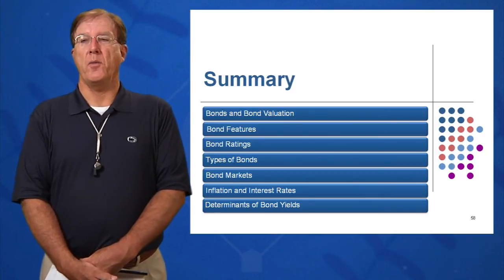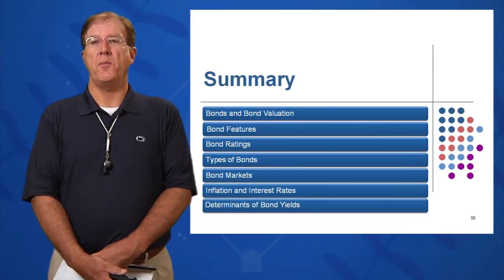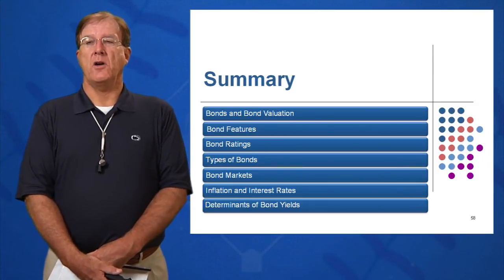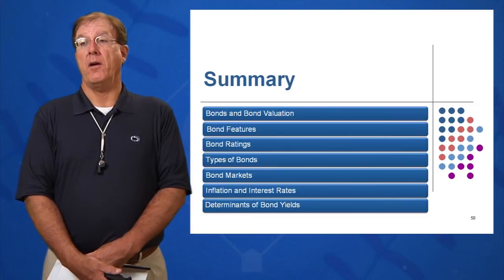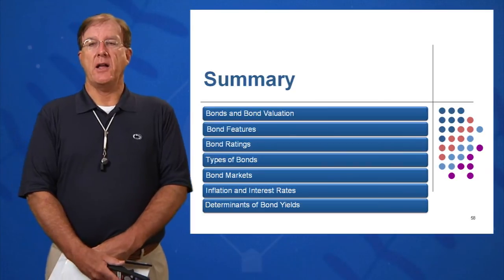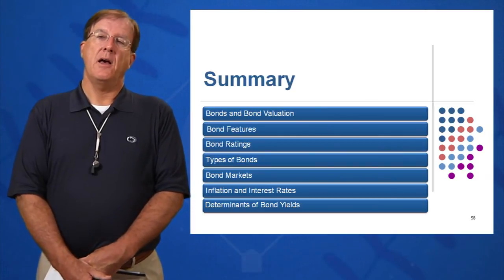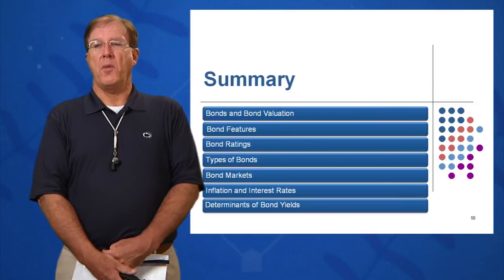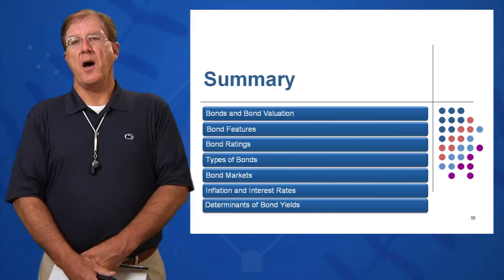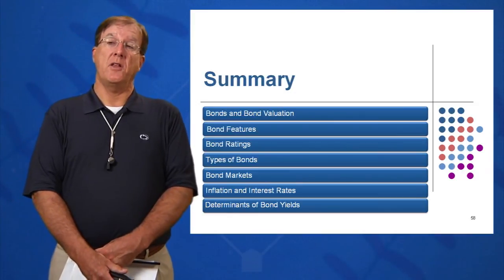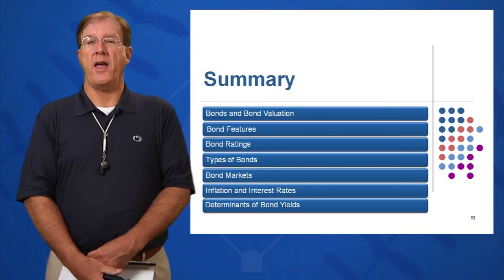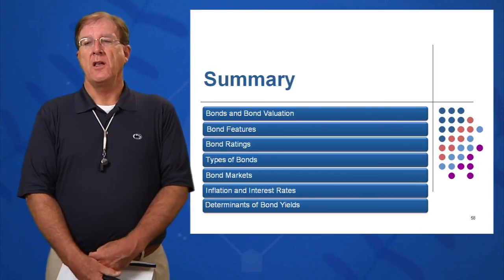Learning objective number three covered bond ratings. We have rating agencies that rate bonds to help protect us, the investor. Types of bonds were called out in learning objective number four — income bonds, zero-coupon bonds, put bonds, callable bonds, government bonds, municipal bonds, and treasury bonds.